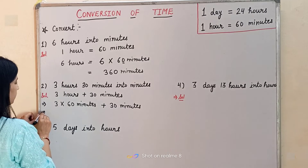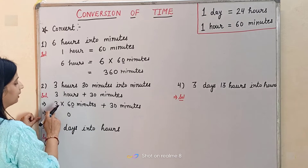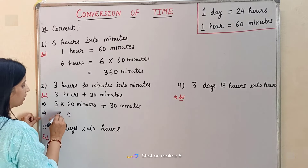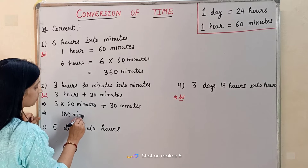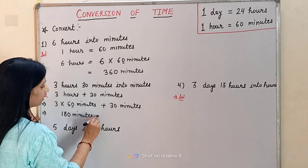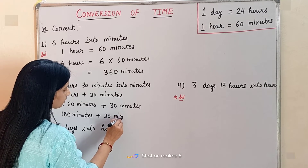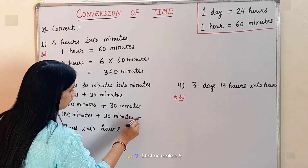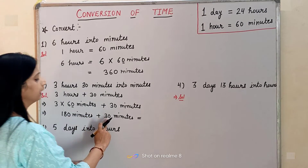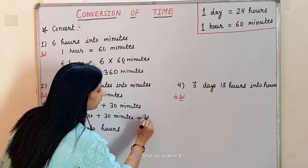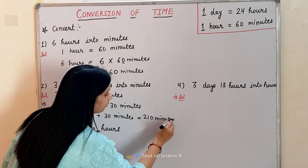Now let's multiply: 3 multiplied by 60. We write zero, then 3 times 6 is 18. So it is 180 minutes plus 30 minutes. Now 180 plus 30 will be 210 minutes. So our answer will be 210 minutes.